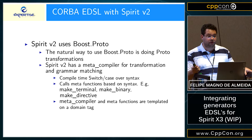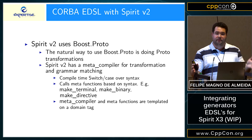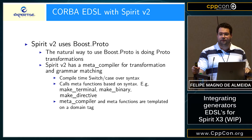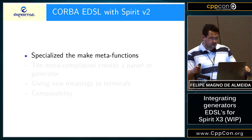The meta-compiler and meta-functions are templated on a domain tag. That's what makes Spirit V2 work for both generators — Boost.Karma — and parsers — Boost.Chi. It has a domain for Karma and a domain for Chi. The same expression is then meta-compiled with the meta-compiler on each domain to create a generator or a parser.